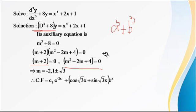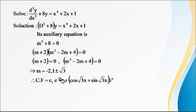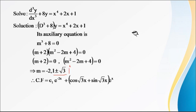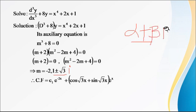Using the quadratic formula −b ± √(b² − 4ac) / 2a, we get complex roots. The result is in the form α ± βi, where α = 1 and β = √3.